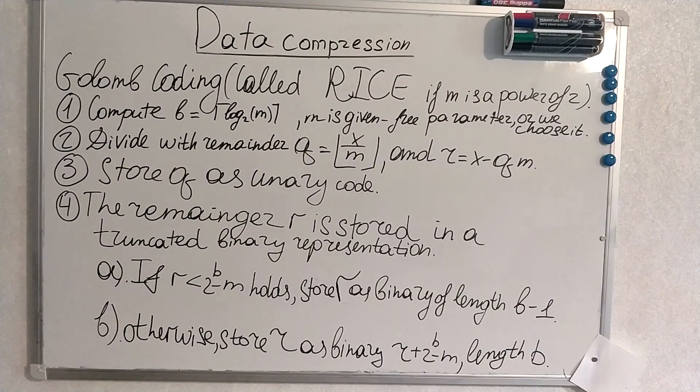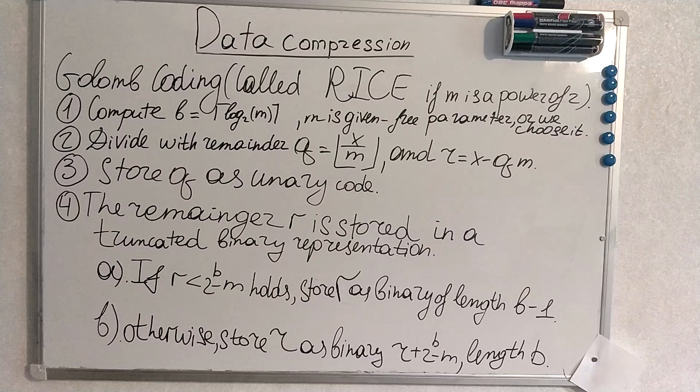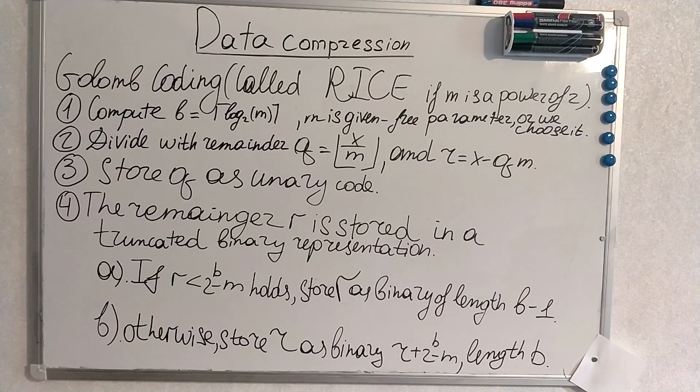Now we proceed to Golomb coding. It's also called RICE if m is a power of 2. So what is m? m is a free parameter.